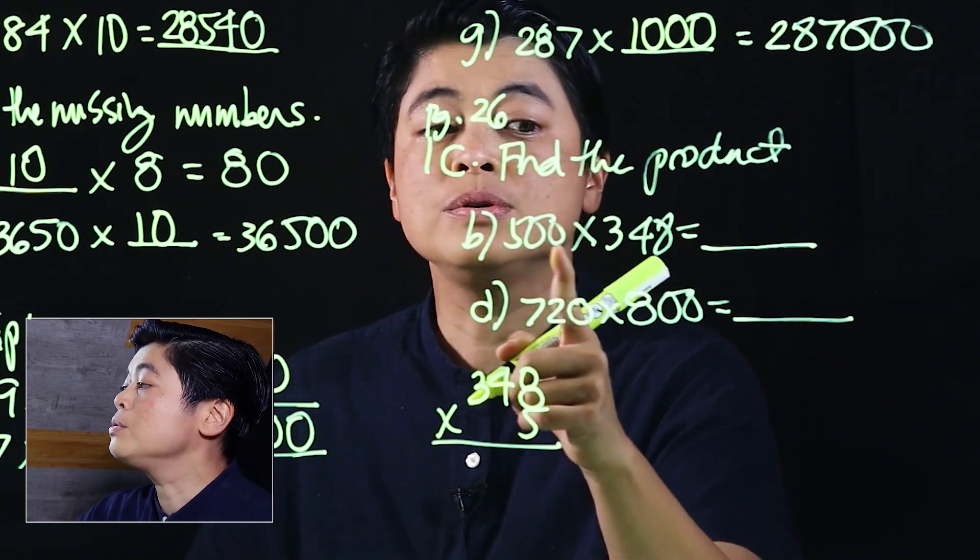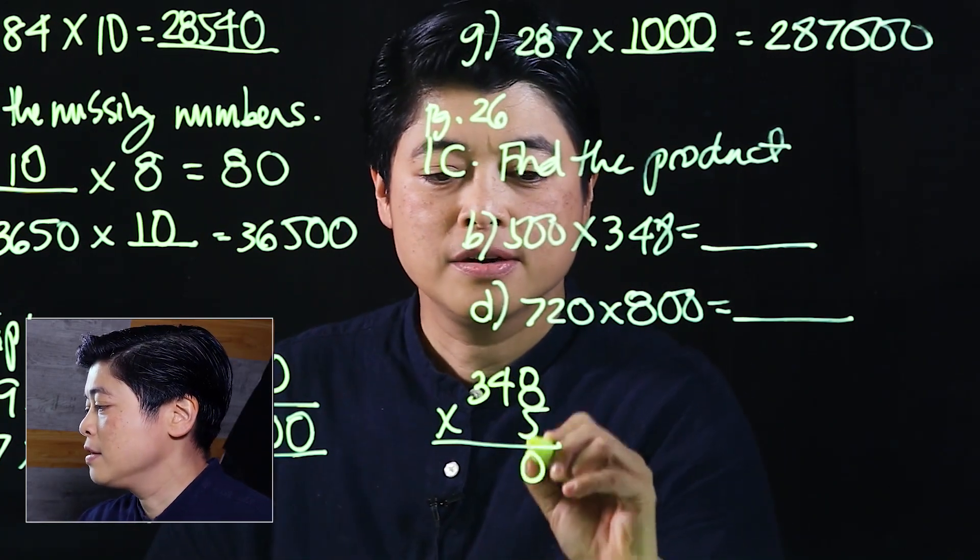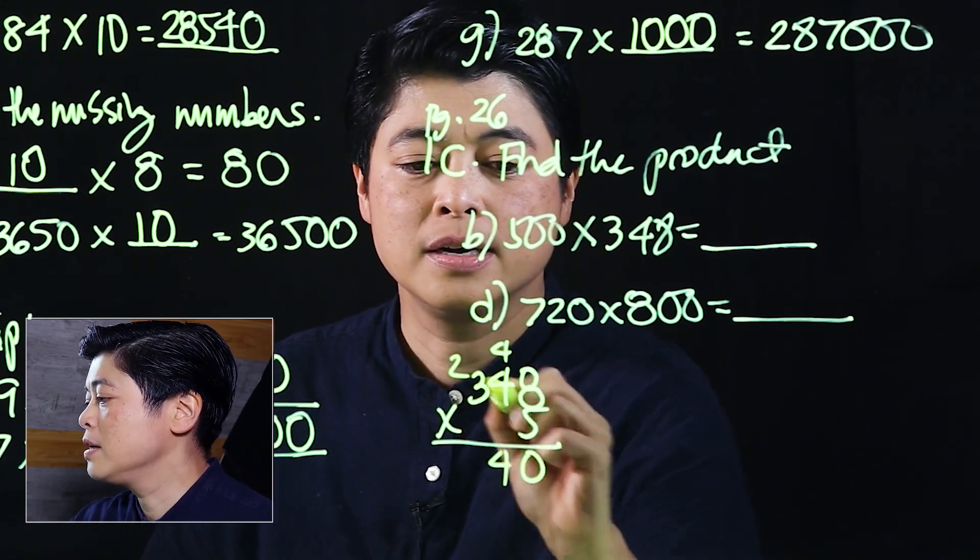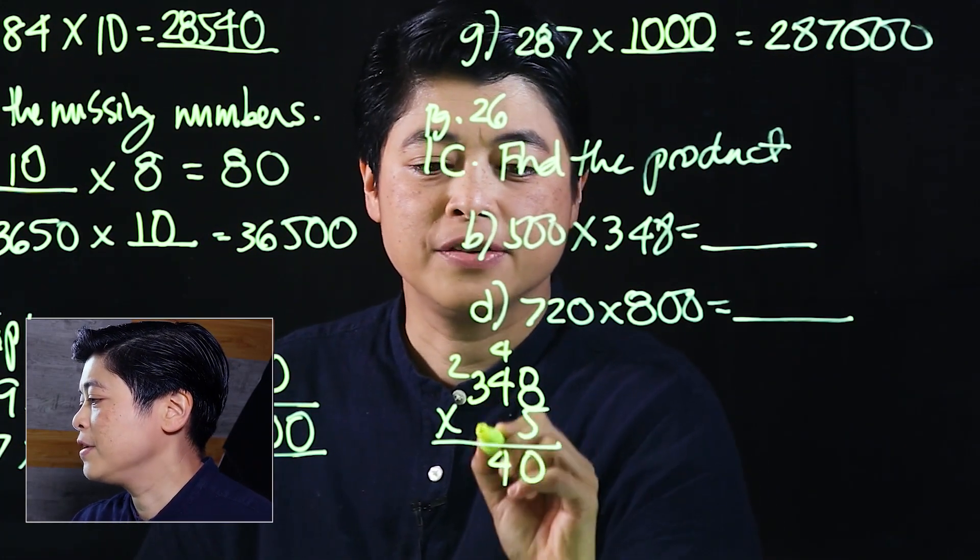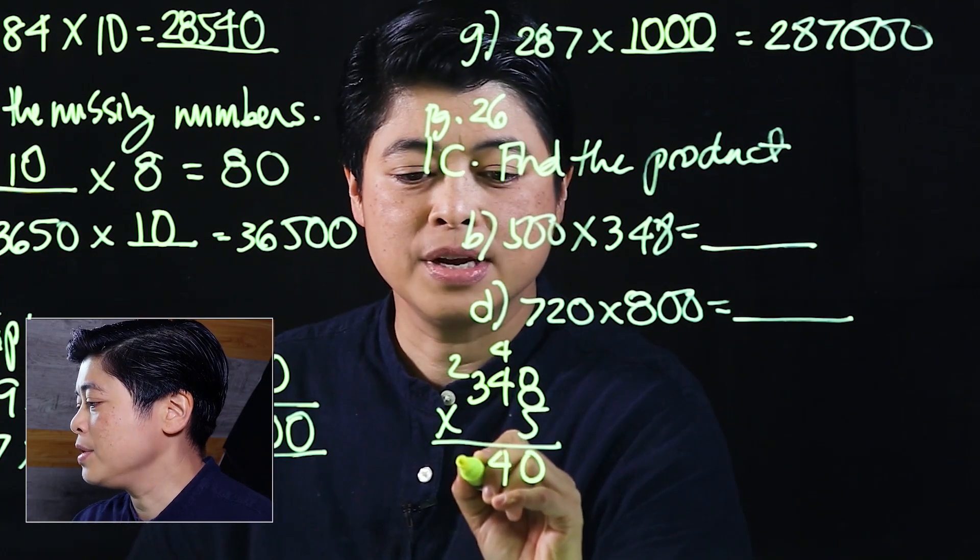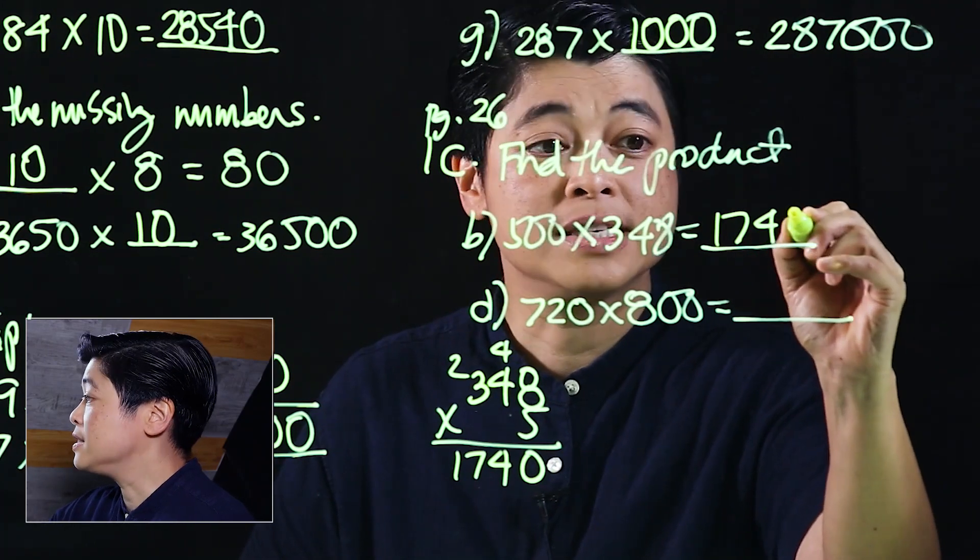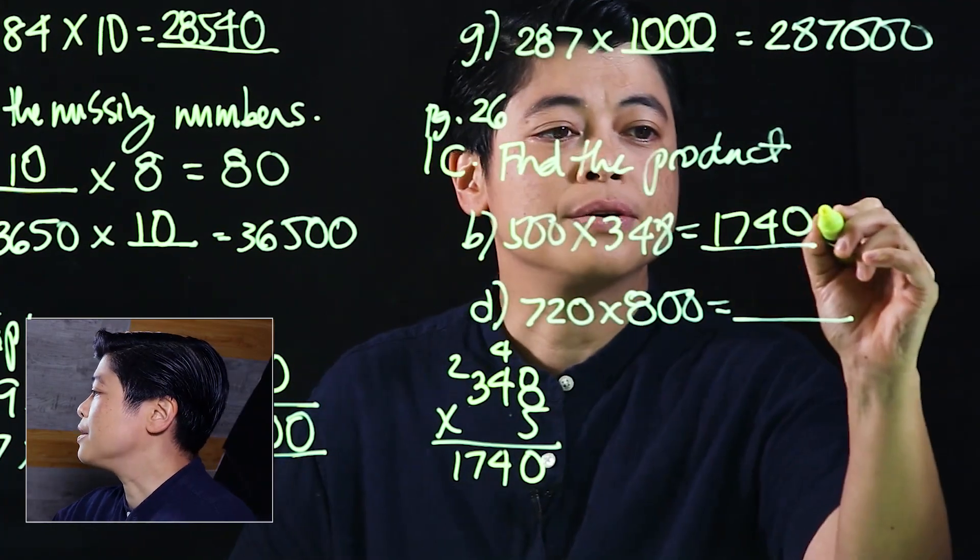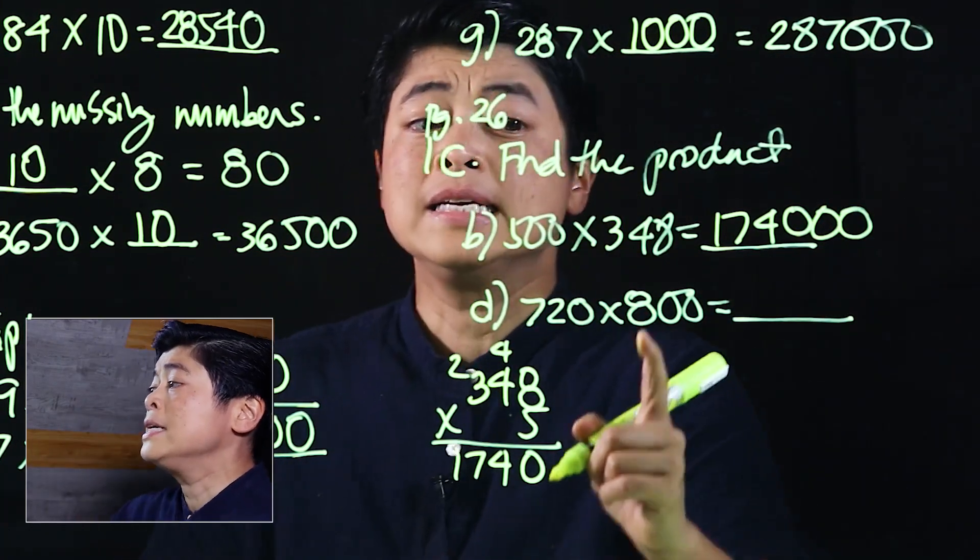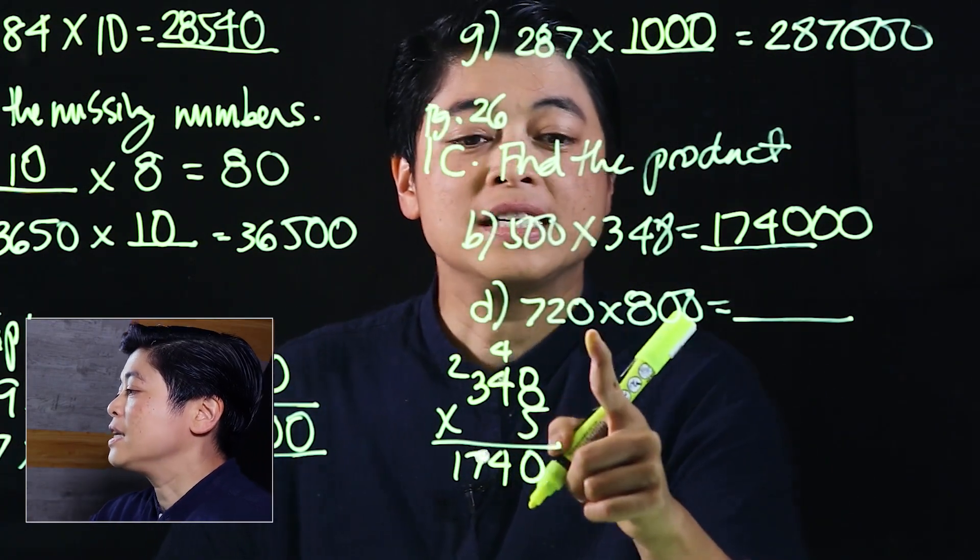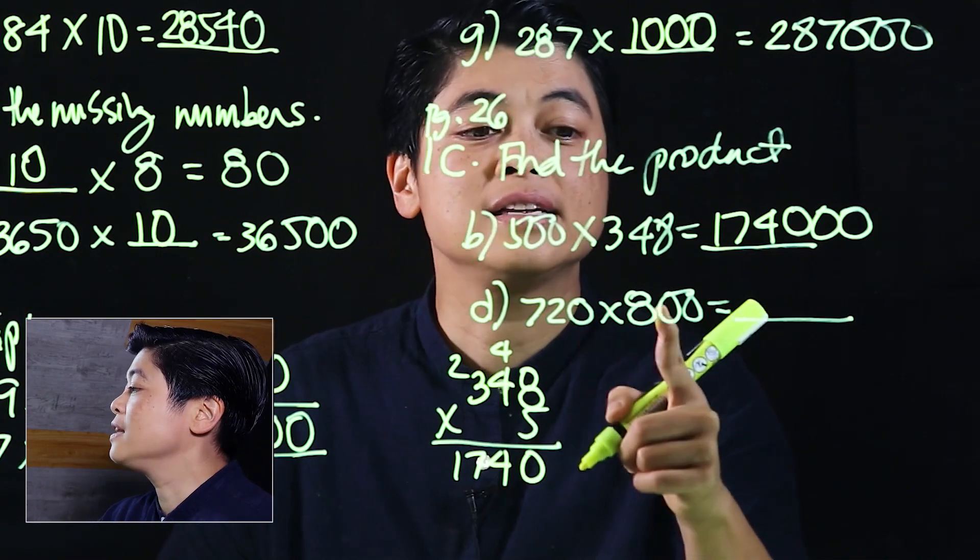So that means 40, this is 24, this is 15 plus 2 is 17. So that's 1740 with two zeros. Similarly here, we have zeros on the first and zeros on the second, so we just drop the zeros.